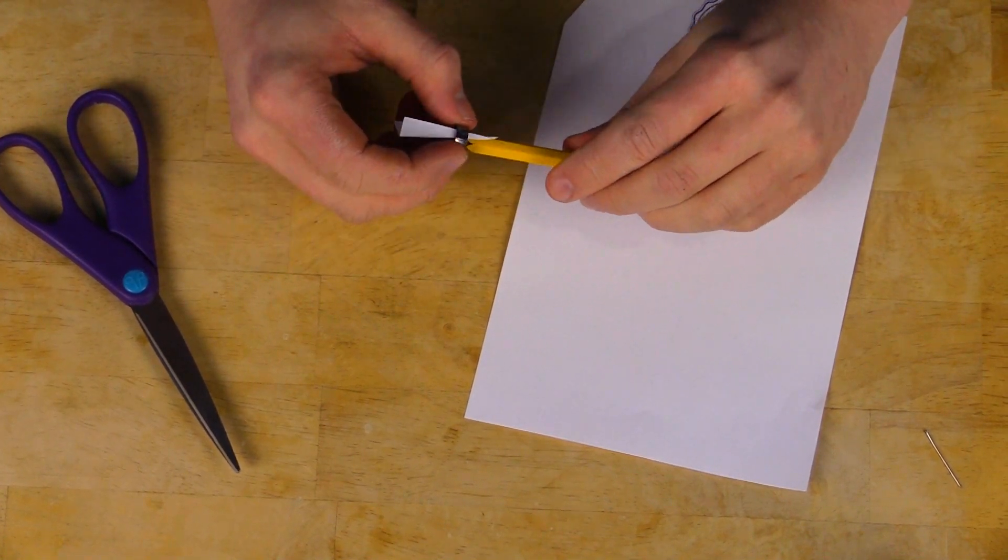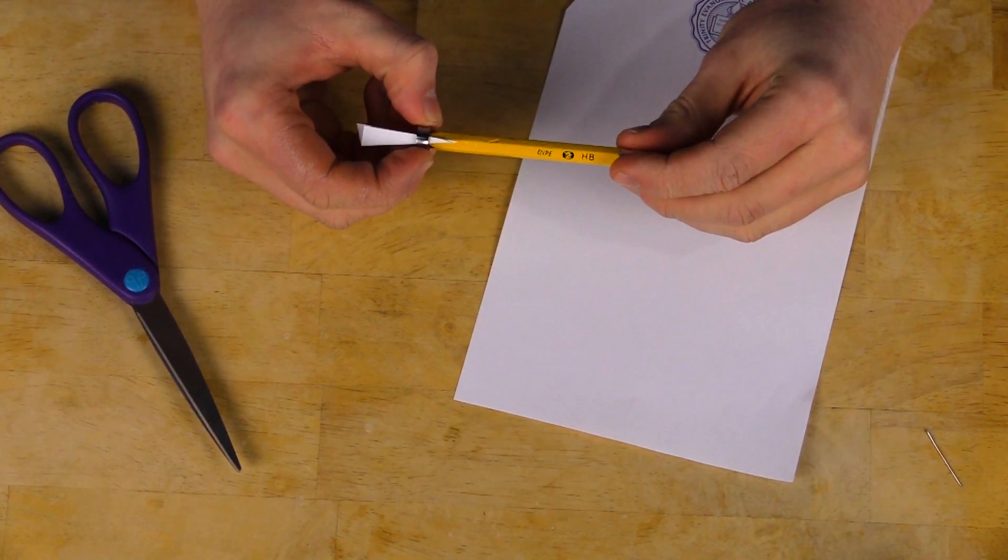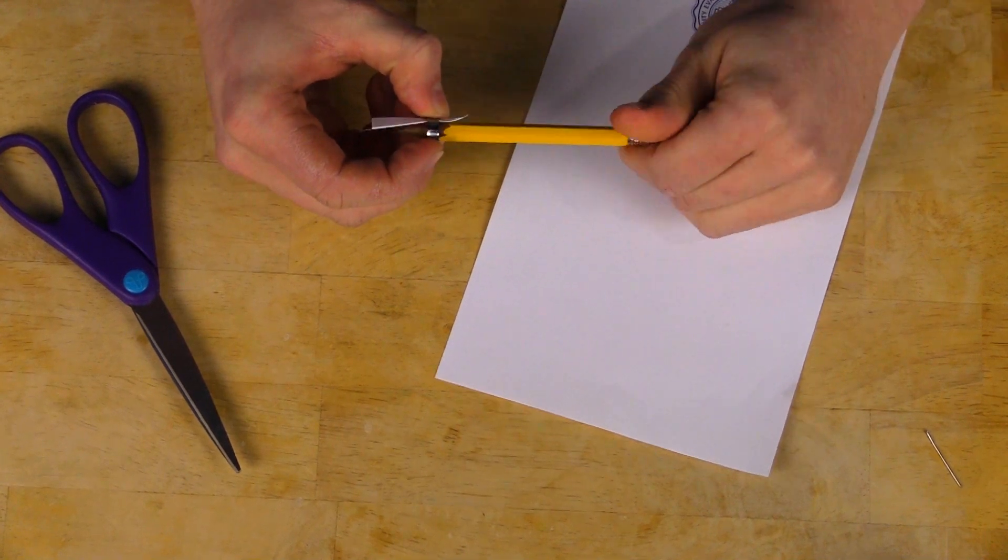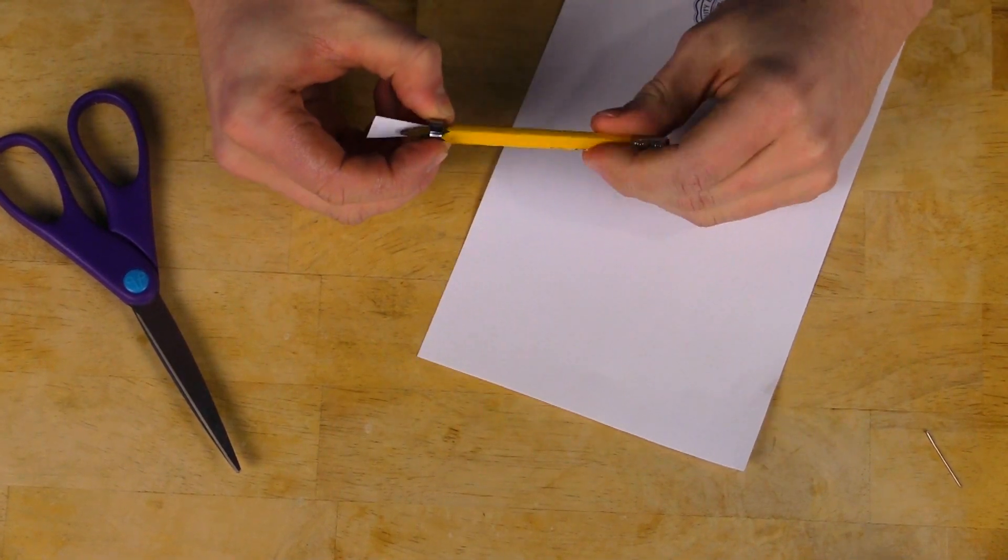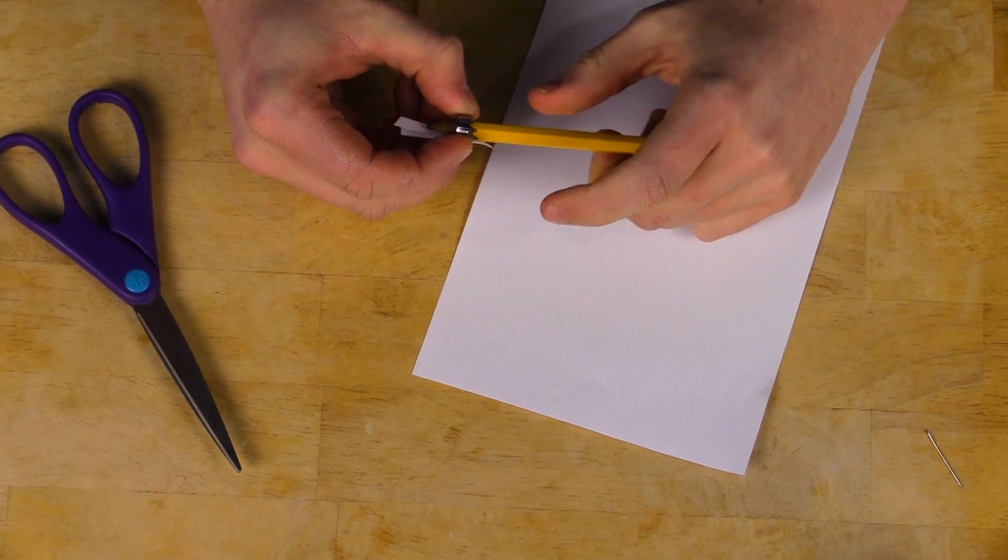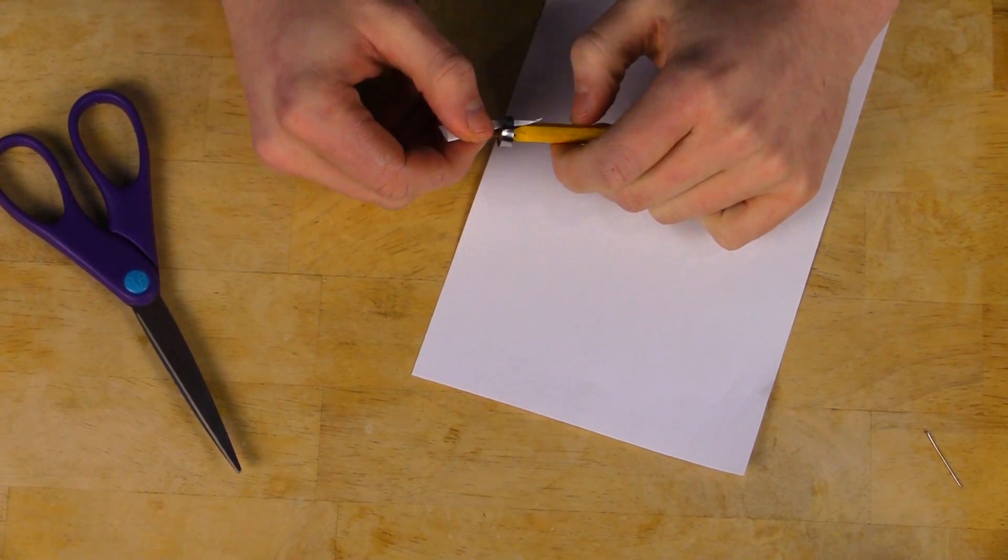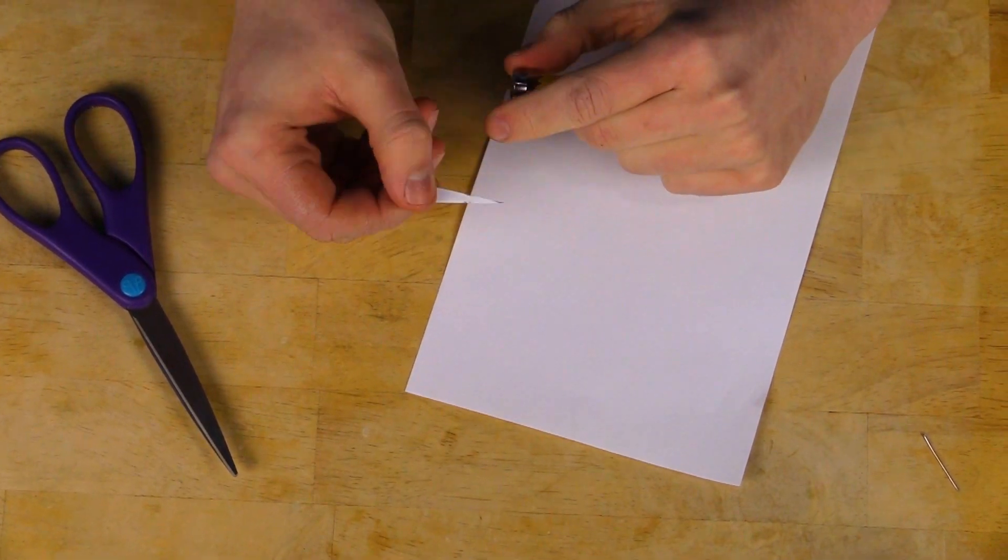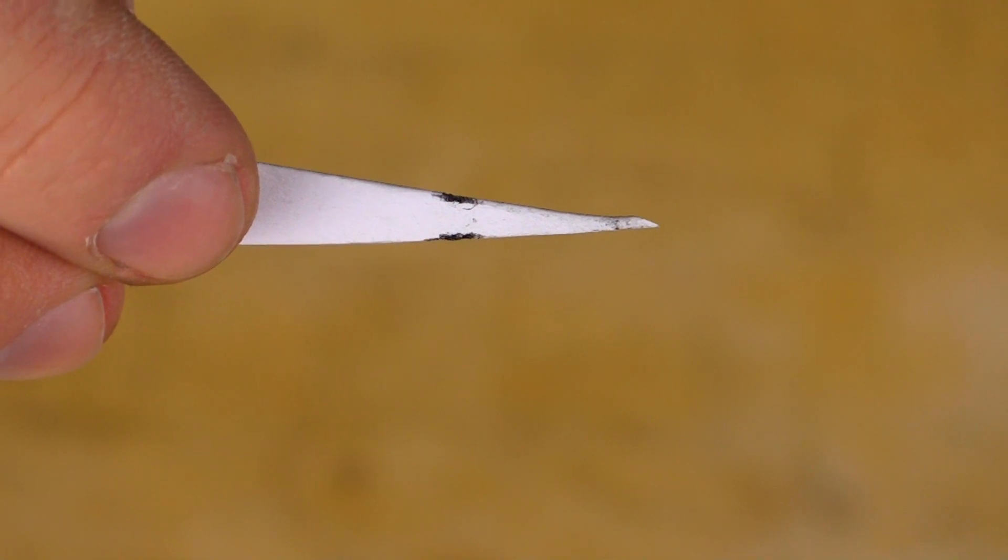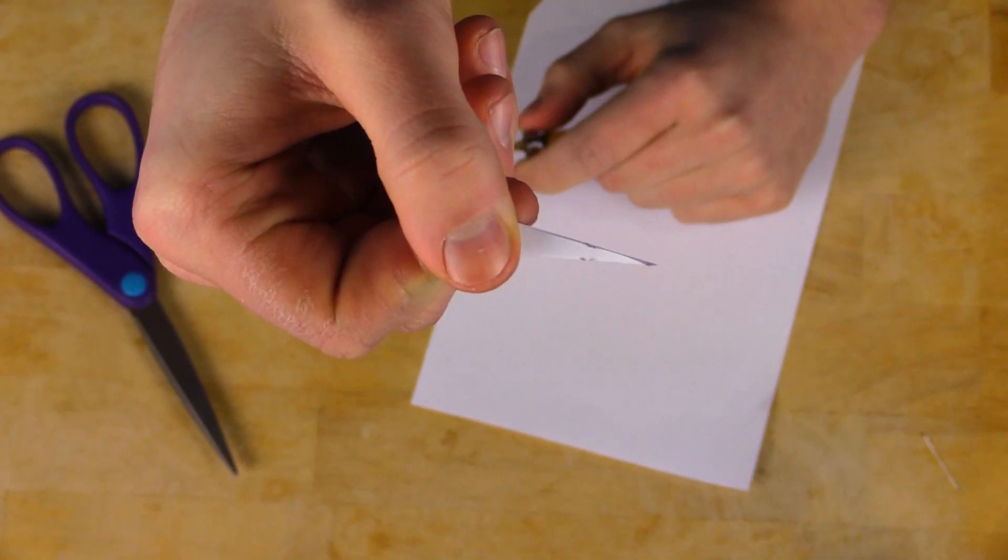So once the bearing's all snug you're going to pinch the outer race of the bearing and simply rotate the pencil maybe ten or twenty times. And once you do that you're going to take the piece of paper out and you're going to notice that there's some black gunk on the paper and that is what has been keeping your bearing from playing well.